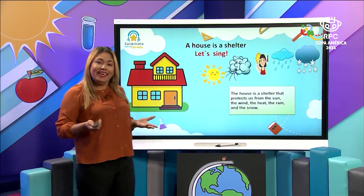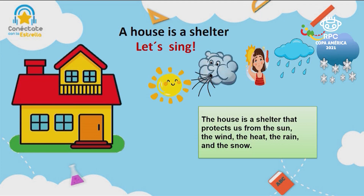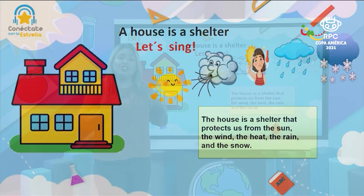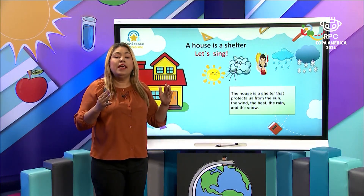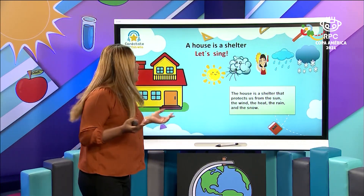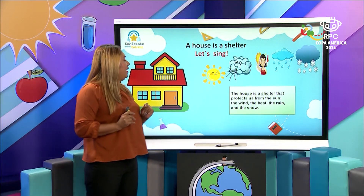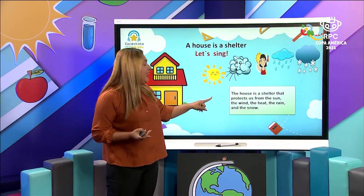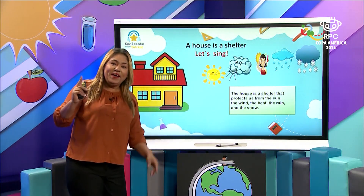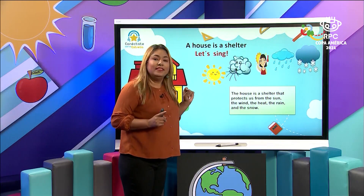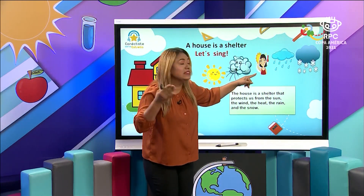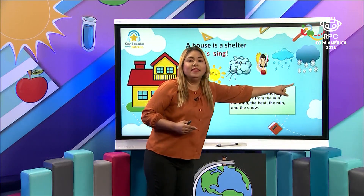Now it's time to sing. Let's read first: the house is a shelter that protects us from the sun, the wind, the heat, the rain, and the snow. Let's do it: the house is a shelter that protects us from the sun, the wind, the heat, the rain, and the snow. The wind, the heat, the rain, and the snow. Look — this is the sun, the wind, the heat, the rain, and the snow.